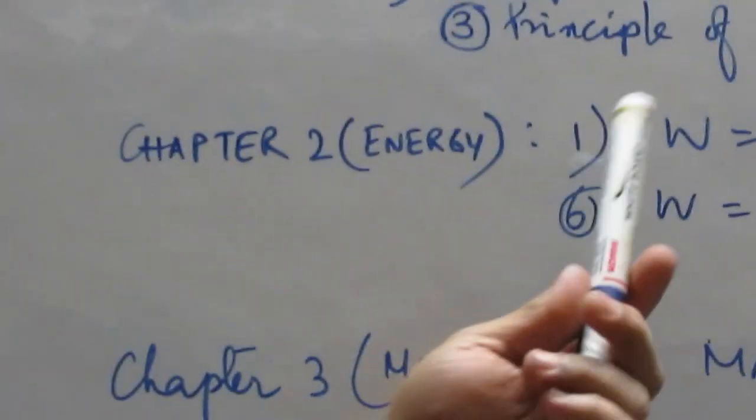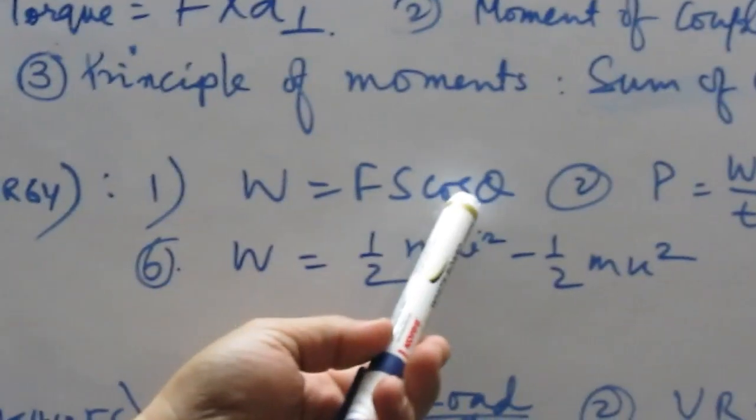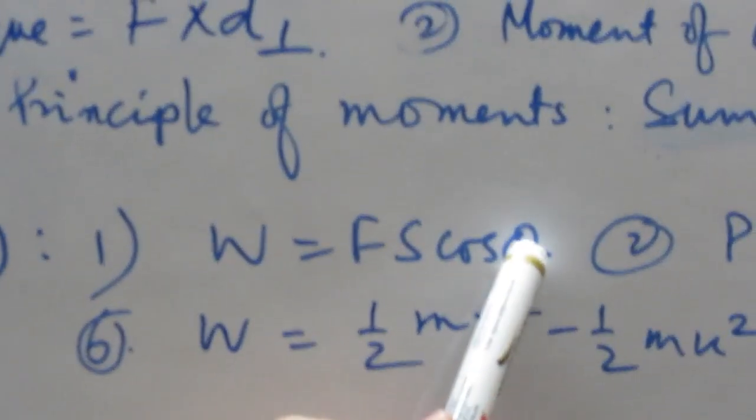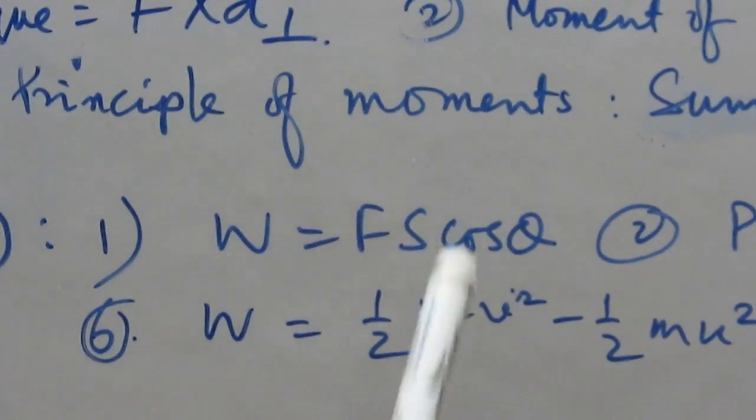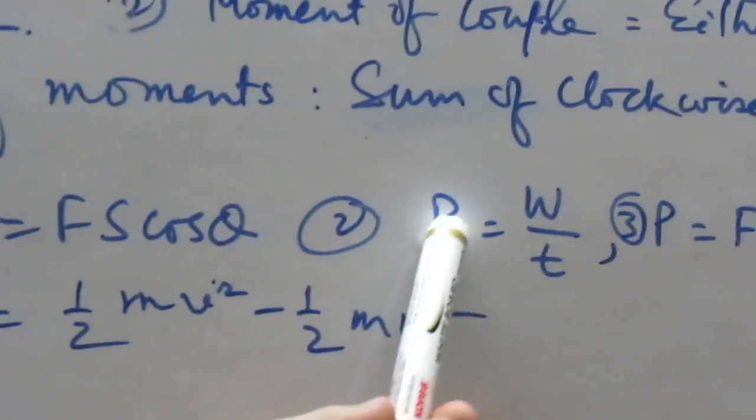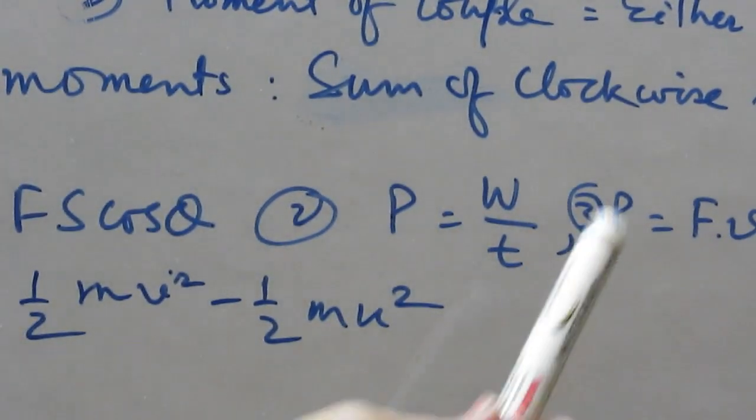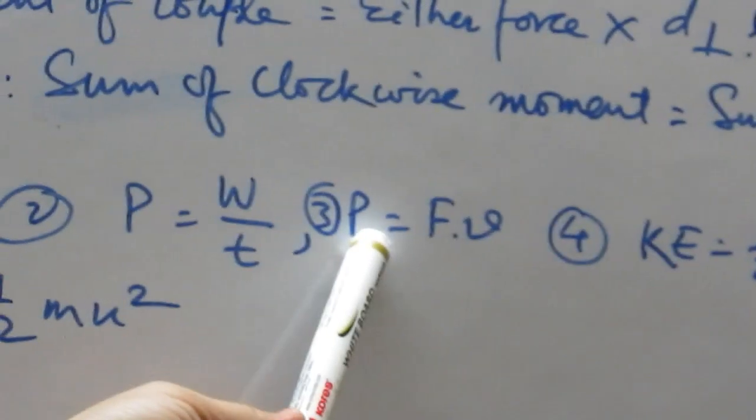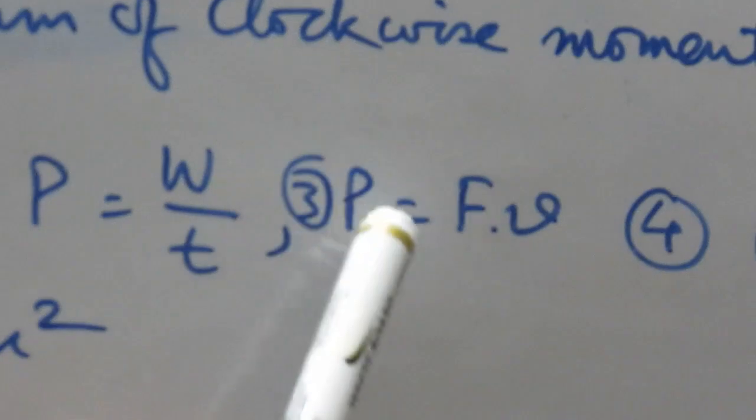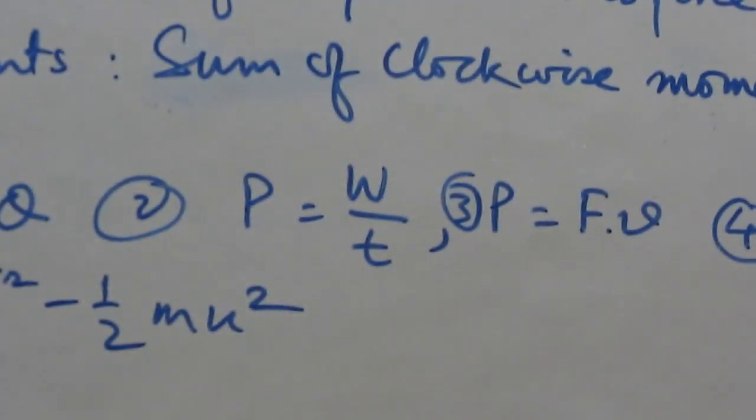Chapter 2 is the important work. Work done equals force into displacement into cos theta. Force, displacement, and theta. Theta is the angle. The other formula is power is equal to work done by time, or energy by time. The other formula is power equals force into velocity. How do you know how to use the power? What is given to you?